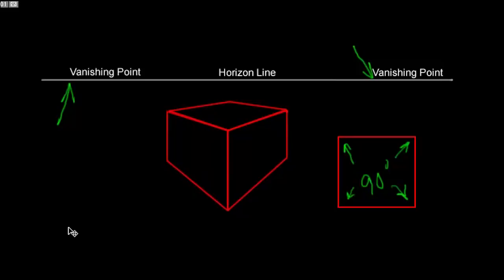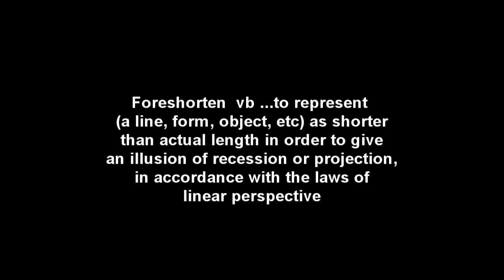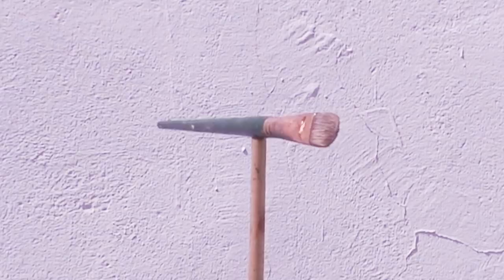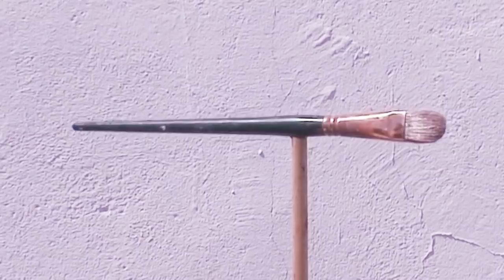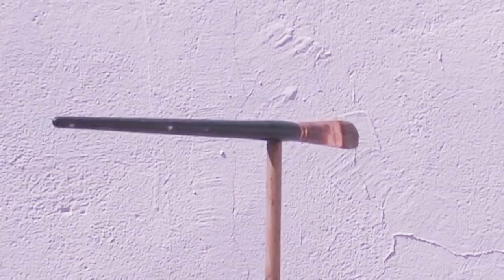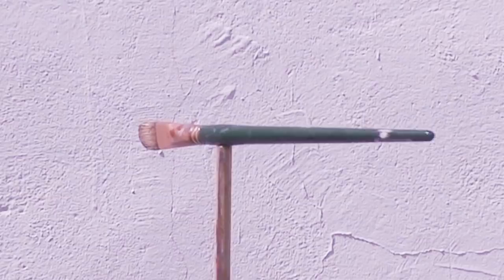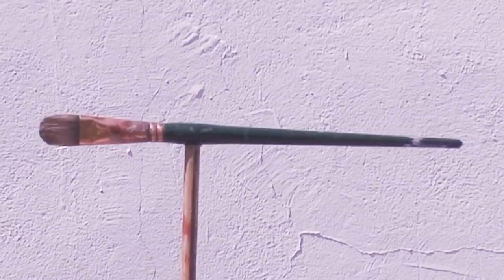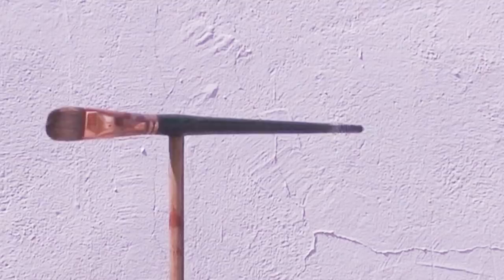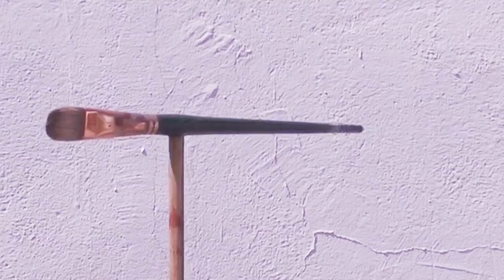Now let's take a quick look at foreshortening. To foreshorten is to represent a line, form, or object as shorter than actual length in order to give an illusion of recession or projection in accordance with the laws of linear perspective. The left side of our brain knows how long this brush is, but when we draw it as a foreshortened object it will appear to be very short in length. When we turn the brush sideways we see its true full length and our left brain is totally satisfied. But when we turn our brush toward the camera it appears to be way too short — our left brain does not relate to that, and in fact will try to get us to draw it longer than it actually is. But again, you have to believe what you see; when you're drawing, draw what you see.